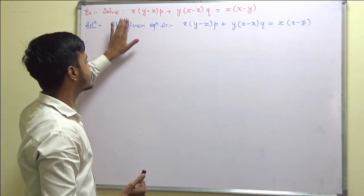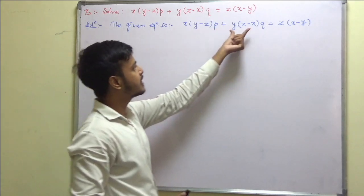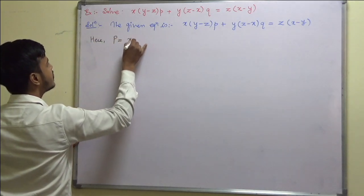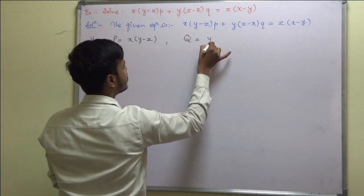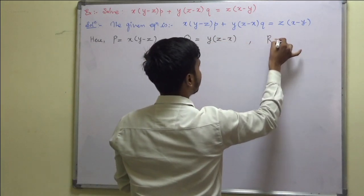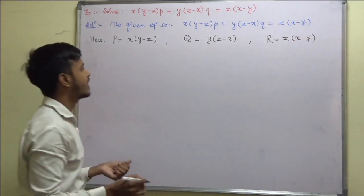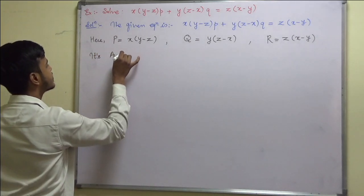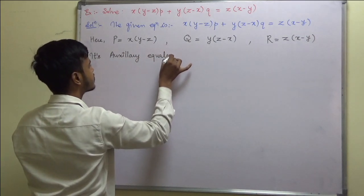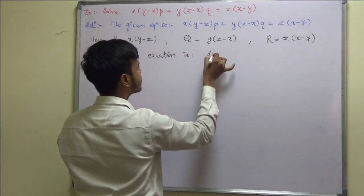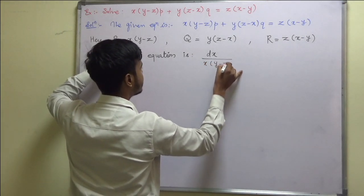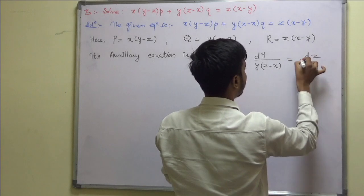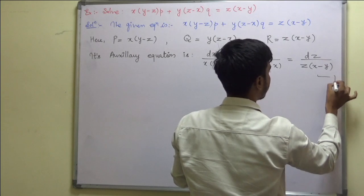Without much ado, let us take this example. We are given this equation which is of the form P·p plus Q·q is equal to R. Here P is equal to x(y − z), Q is equal to y(z − x), and R is equal to z(x − y). Now let us write down its auxiliary equation: dx upon P, that is x(y − z), equals dy upon Q, that is y(z − x), equals dz upon z(x − y). Say this is equation number 1.